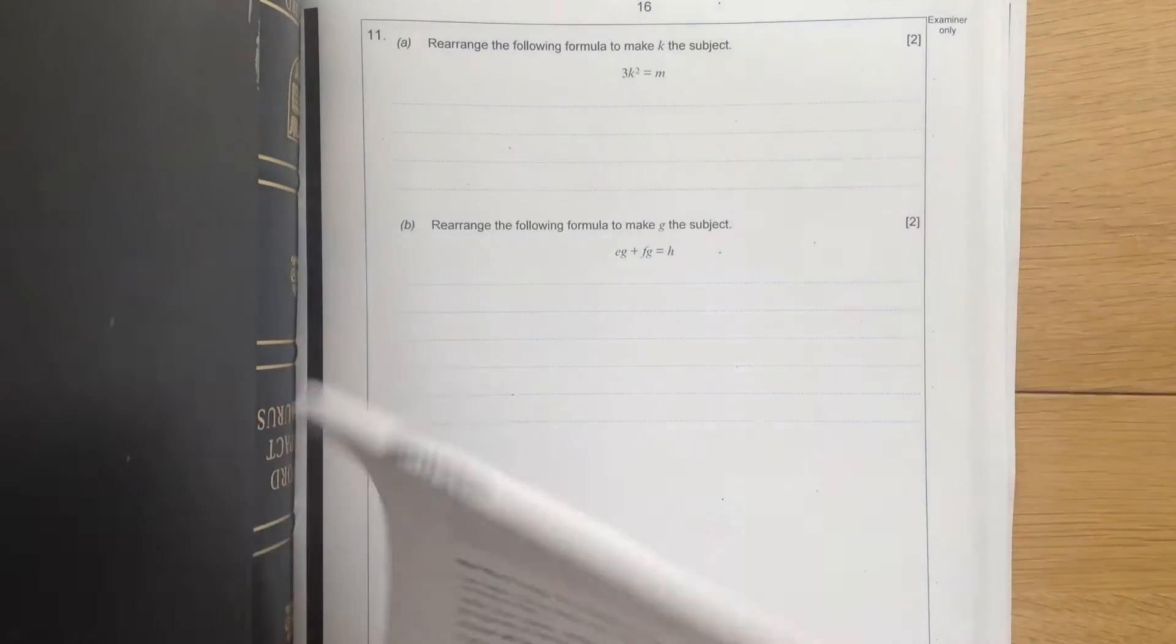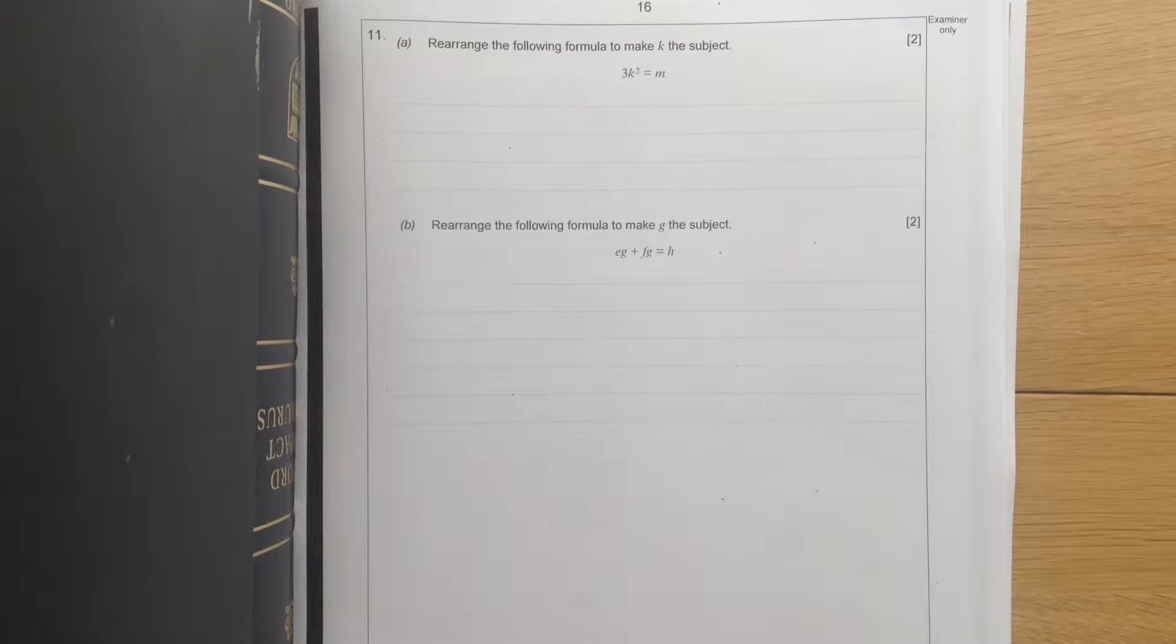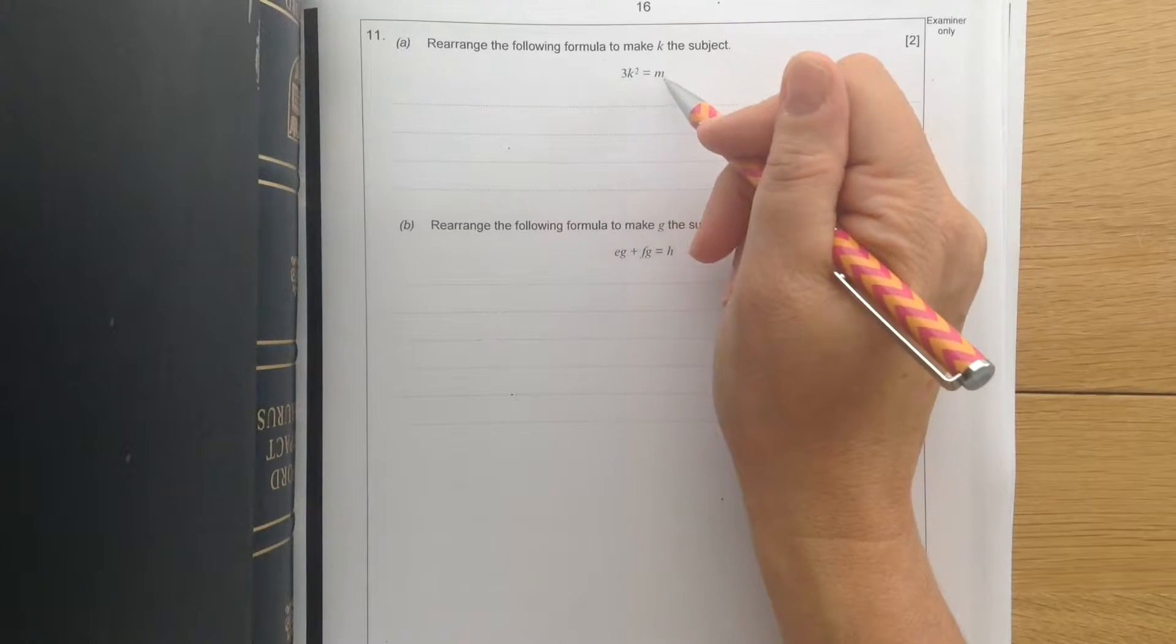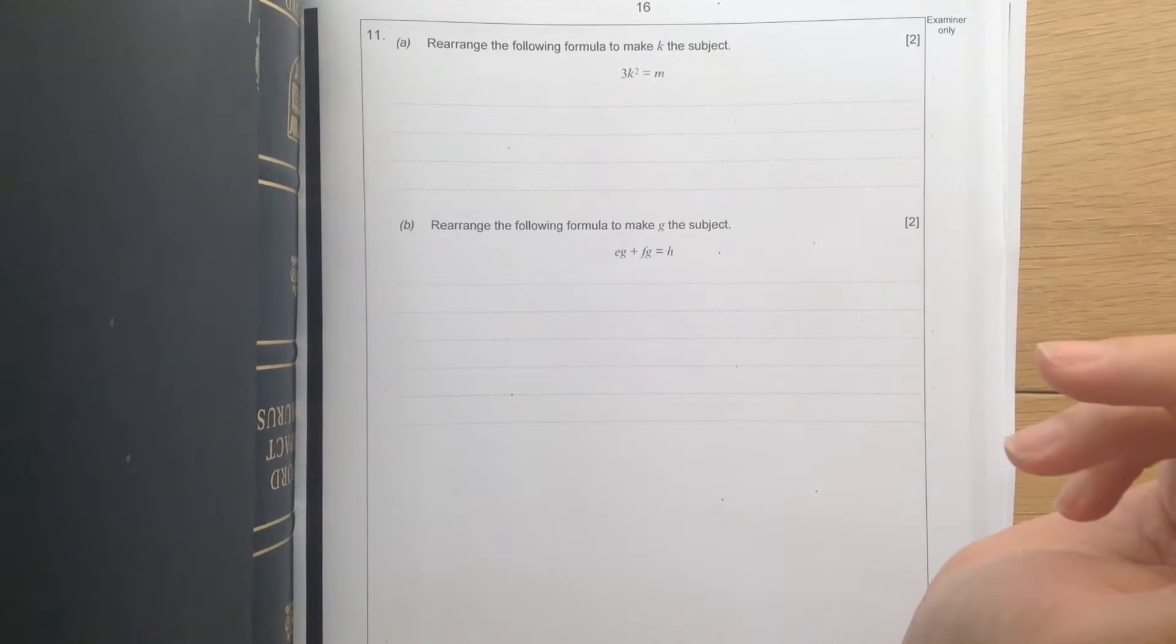Question 11. Rearrange the following formula to make k the subject. So we've got 3 times k squared equals m. We want to make k the subject.